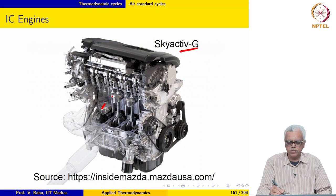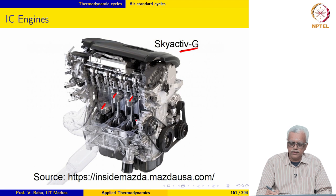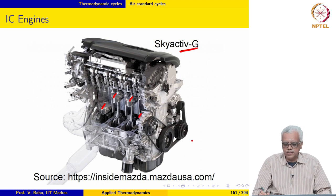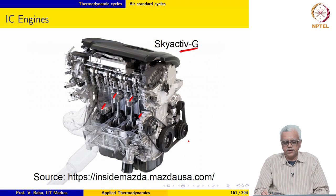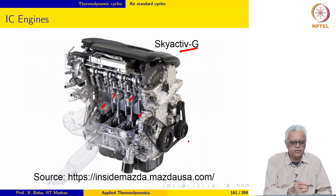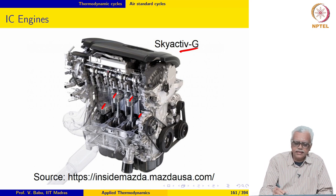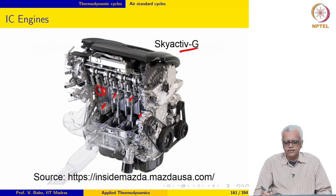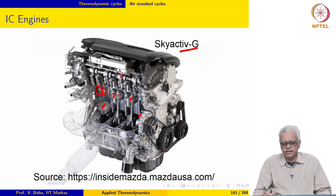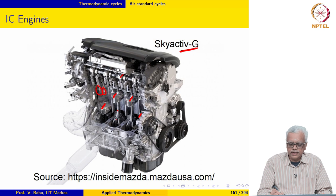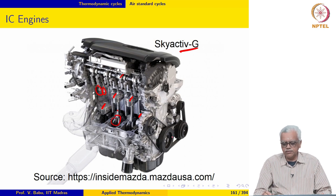Here we see one piston, here a cylinder and another piston, one more cylinder and a piston, and one more cylinder and piston here. The intake and exhaust valves are visible here. The camshaft is also visible here. The connecting rod and crankshaft are also shown.